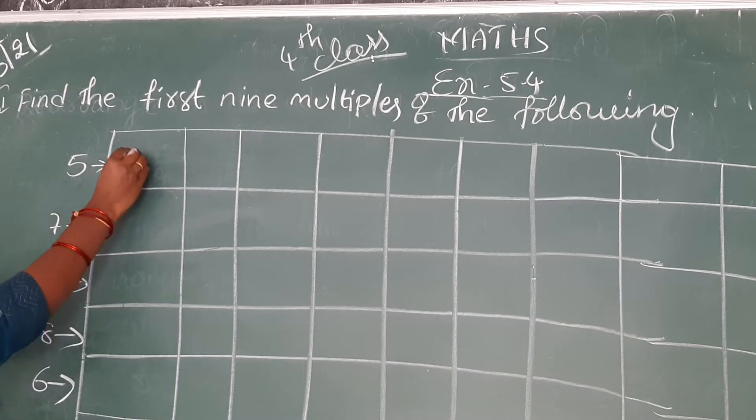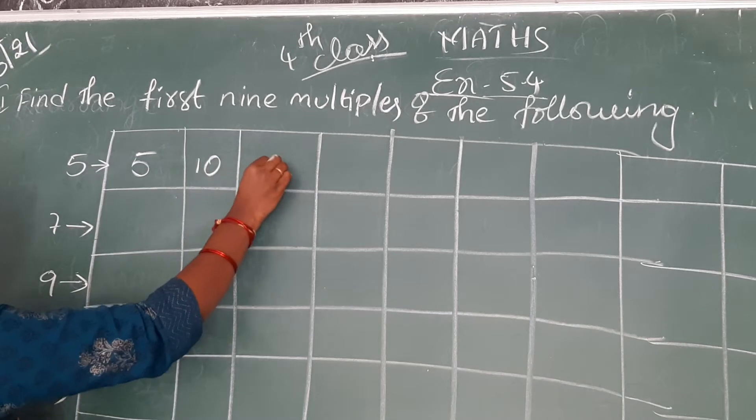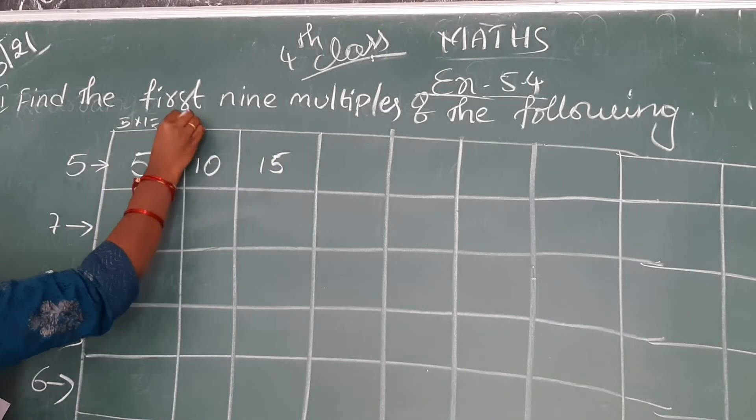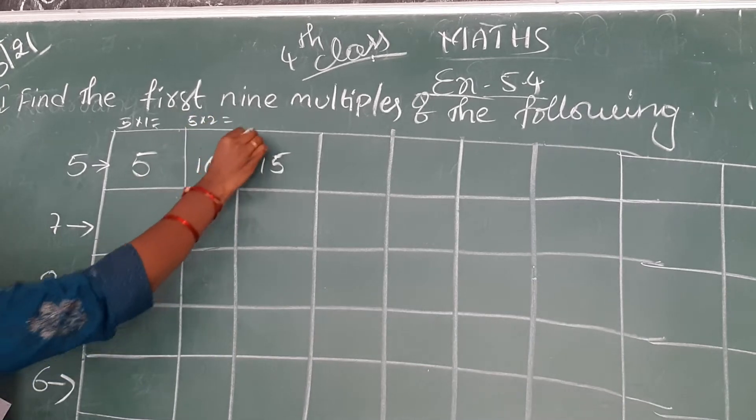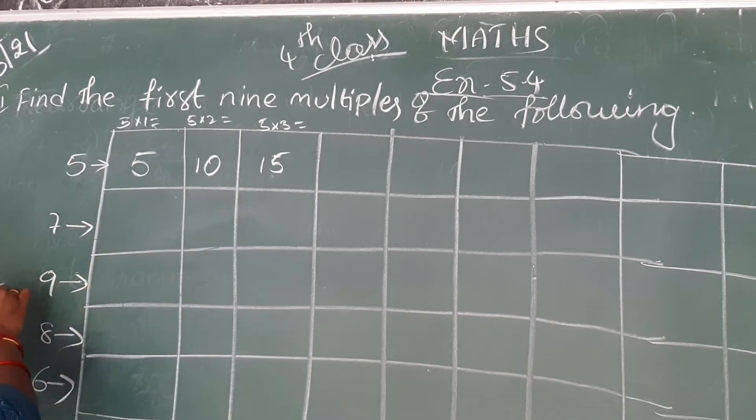5 ones are 5, write 5. 5 twos are 10, write 10. 5 threes are 15. Like this you have to write the 5 table in the first box, okay?